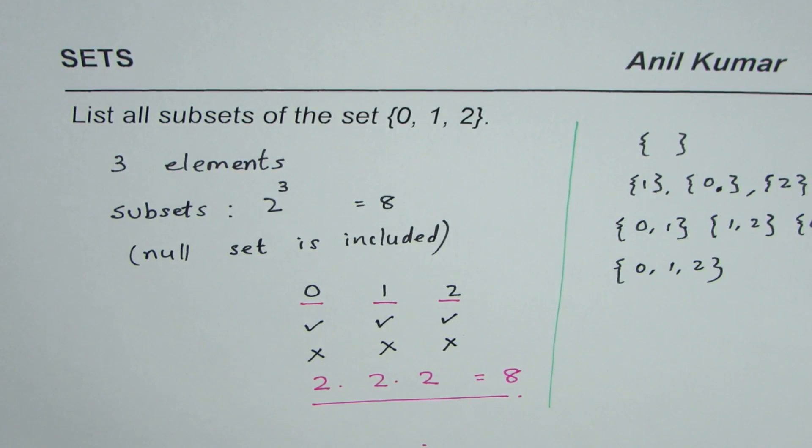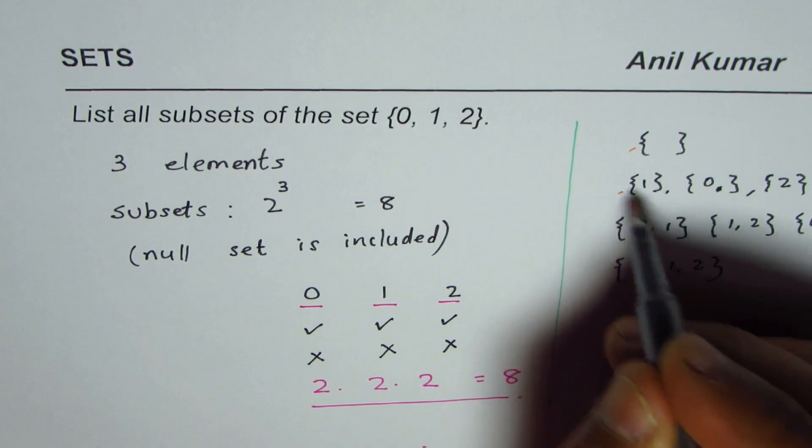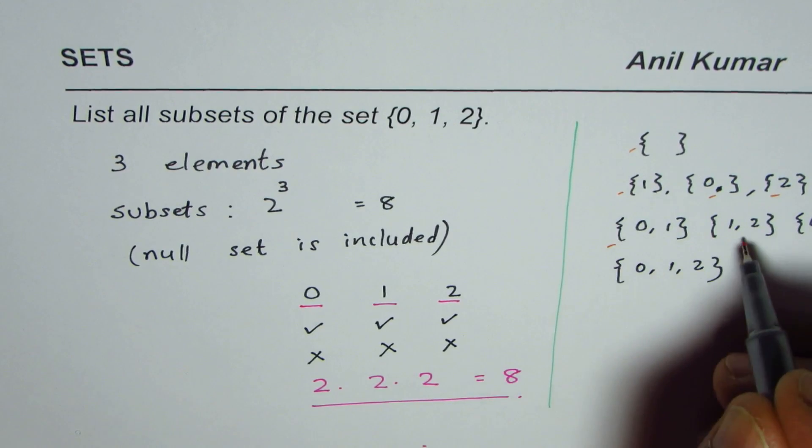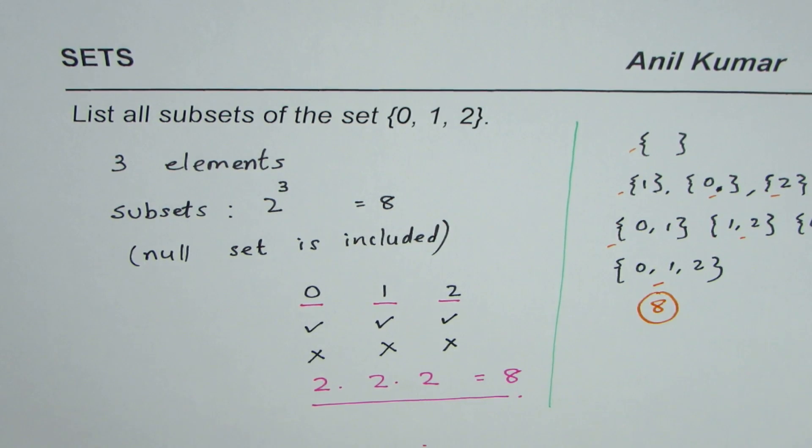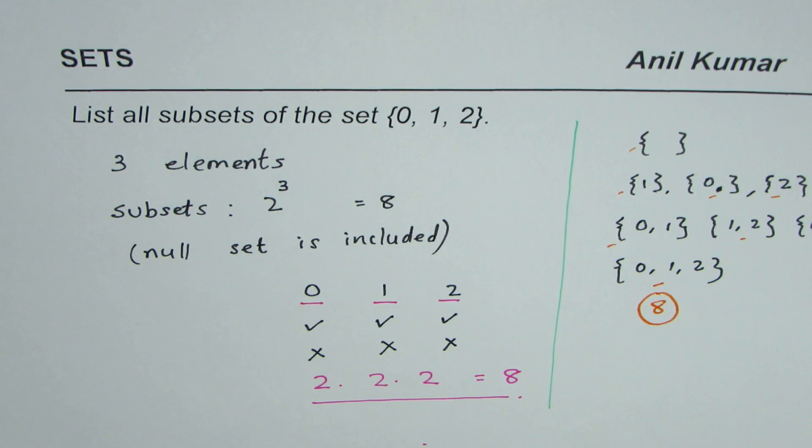Now you can count them: 1, 2, 3, 4, 5, 6, 7, and 8. That gives us 8 subsets. So these are three ways of looking into subsets of a set.